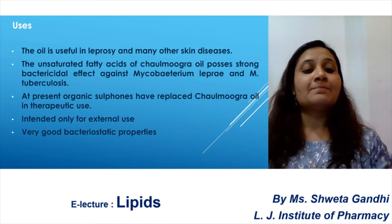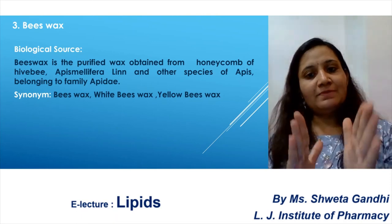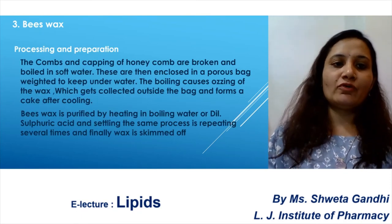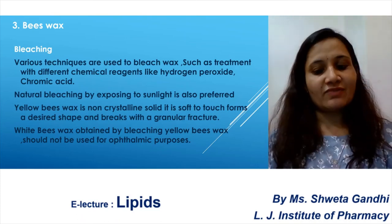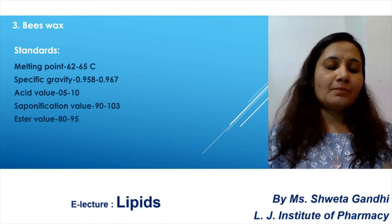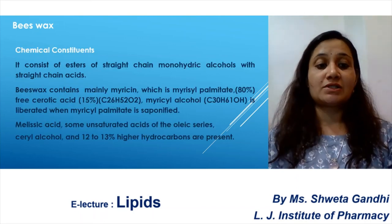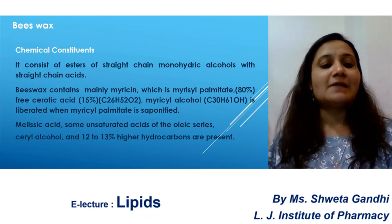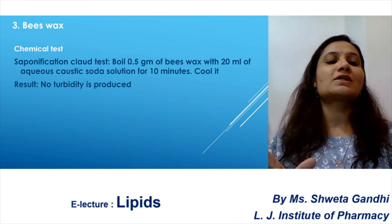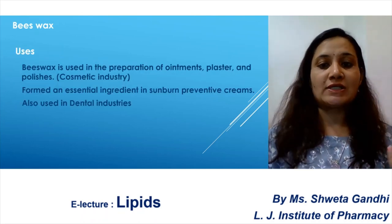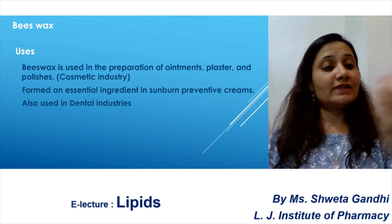Next is beeswax, which is of two types: white beeswax and yellow beeswax. Study morphology, preparation from the honeycomb, and bleaching — by bleaching we can change the color of beeswax. There are standard IP specifications for evaluation: melting point, specific chemical constituents. Beeswax mainly contains myricin and myricyl palmitate. Saponification clot test is importantly used as the chemical test for beeswax. Uses include preparation of ointments, cosmetic industries, and dental plasters for dentures.